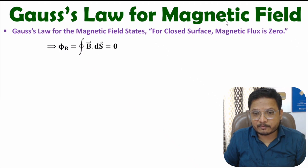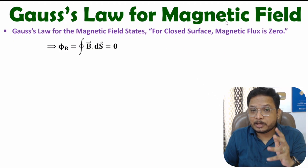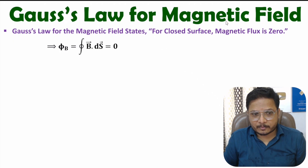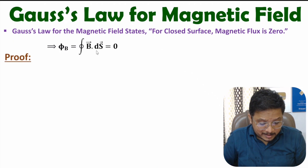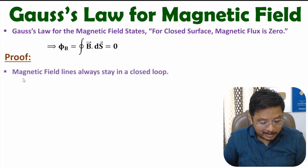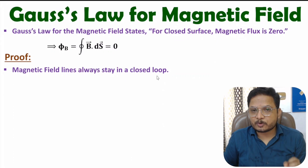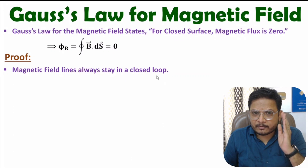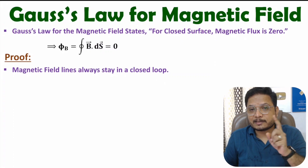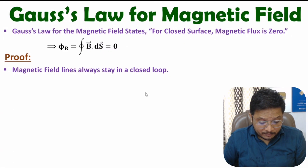Now I'll explain the proof of this statement. To explain this proof, one should know one basic fundamental: magnetic field lines always stay in a closed loop. Let me explain how.